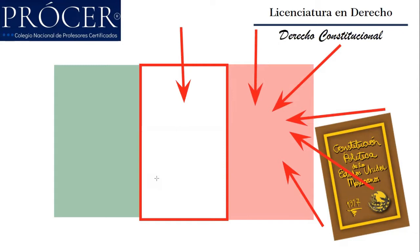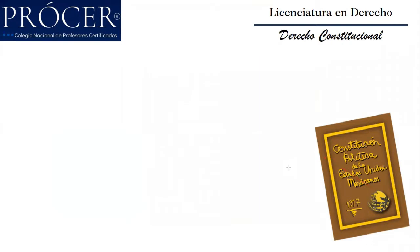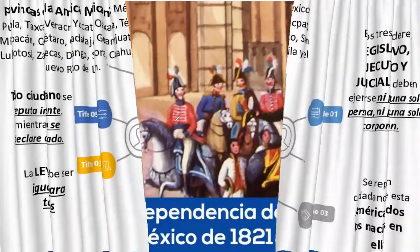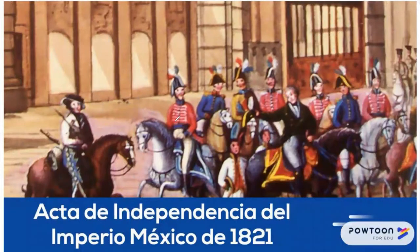Iturbide, ya con mayor claridad sobre lo que pretendía en el tema de la independencia, firma distintos acuerdos y pactos, entre ellos los tratados de Córdoba que hace firmar al último virrey de la Nueva España, don Juan O'Donojú, donde se consolida y se reconoce la independencia del Imperio Mexicano. El ejército de don Agustín de Iturbide entra triunfante a la Ciudad de México el día 27 de septiembre del año de 1821, y para el día siguiente, el 28 de septiembre de 1821, se establece el acta de independencia del Imperio Mexicano.